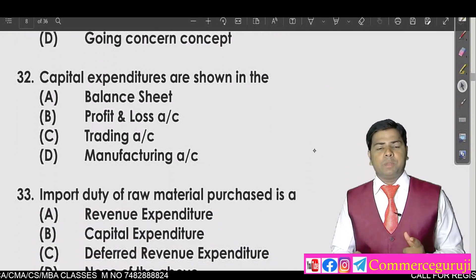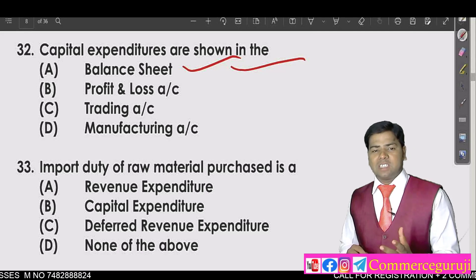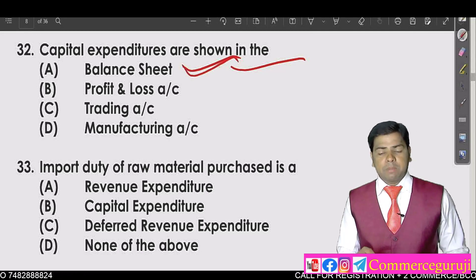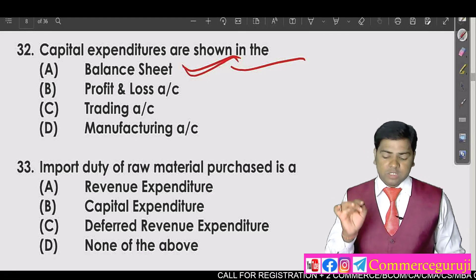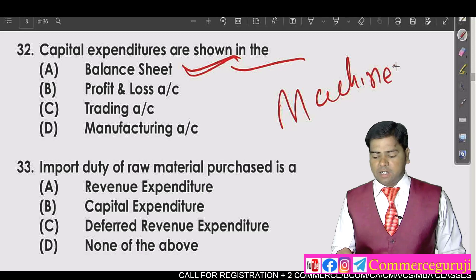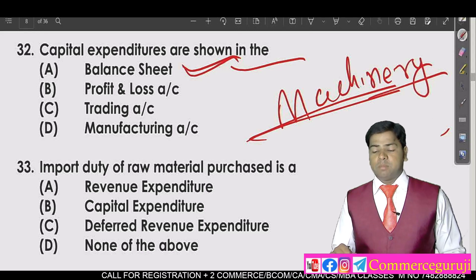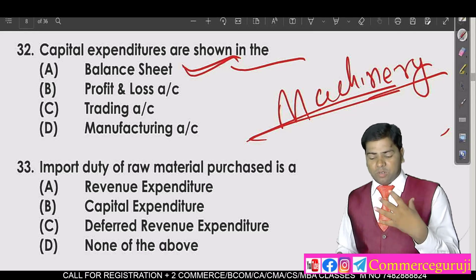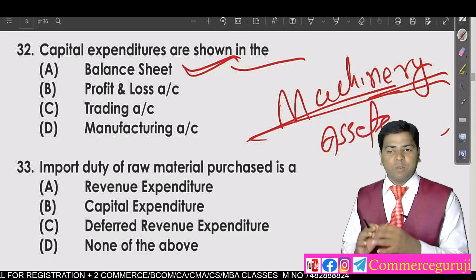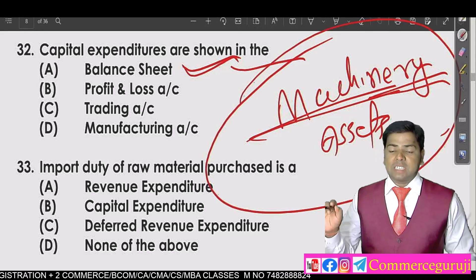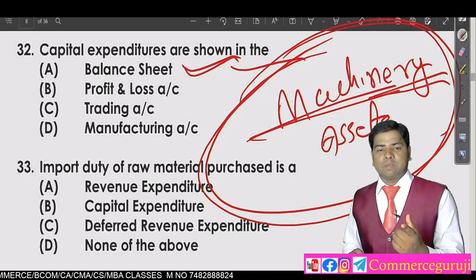The next question is: where is capital expenditure recorded? It is recorded in the balance sheet. This is because capital expenditure is money you invest one time but receive benefits from over the long term — for example, buying machinery and taking benefit from it for 15 to 20 years. So it is a kind of asset, and therefore it goes to the balance sheet.